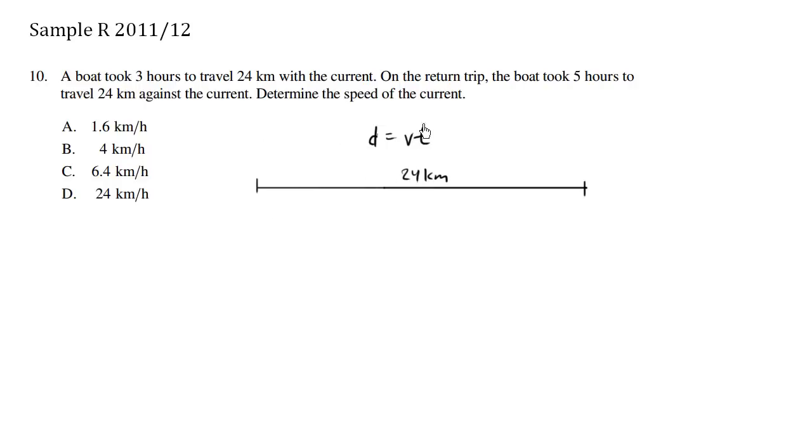We're trying to find the speed of the current. So we're gonna let s be the speed of the current. When you think about the distance, we were given the distance is 24 equals the velocity times the time.